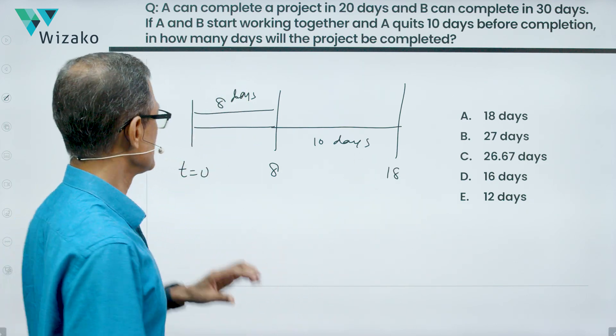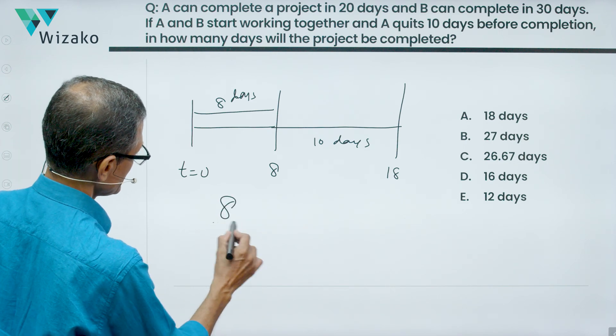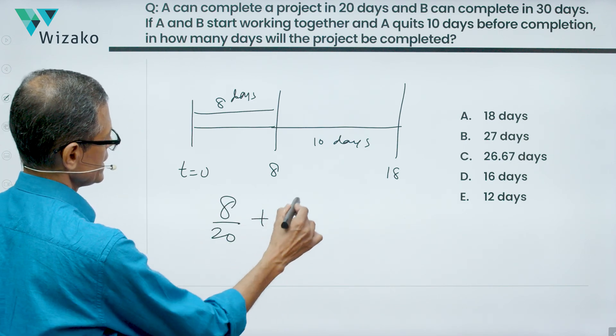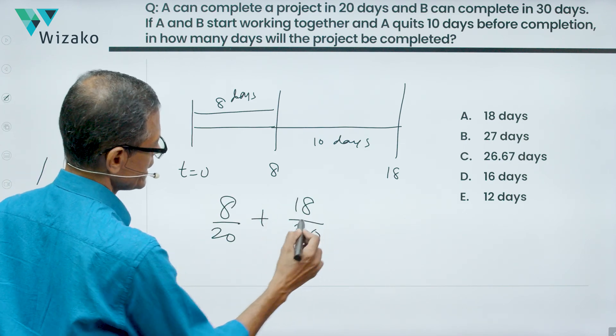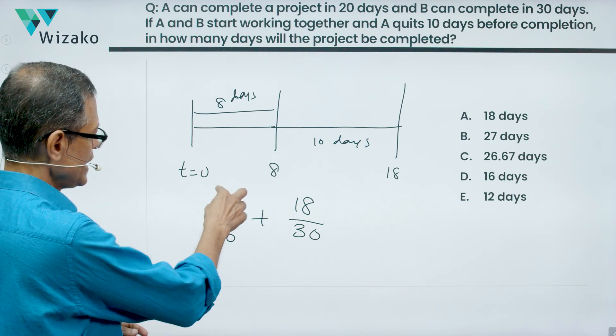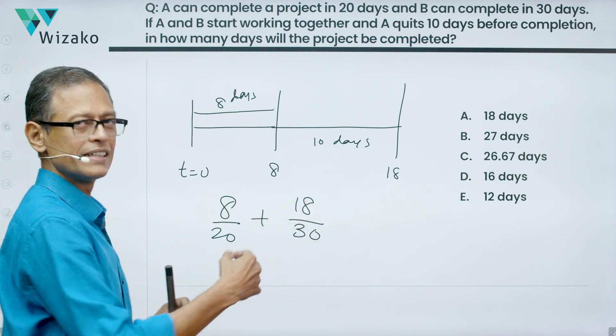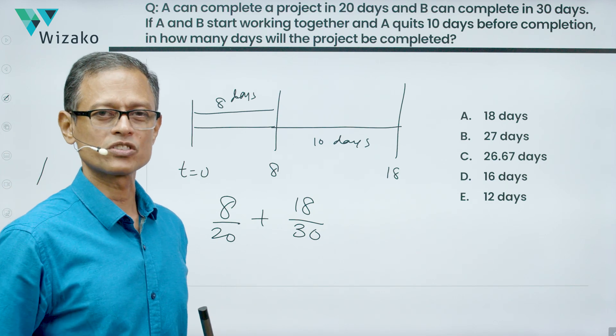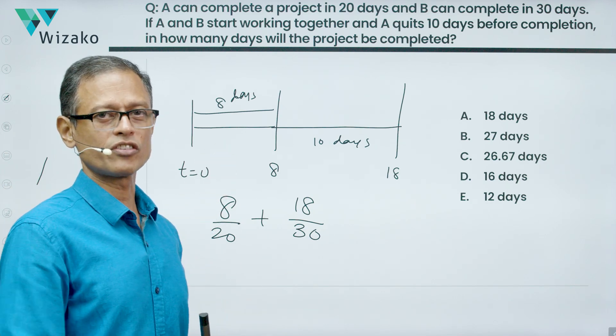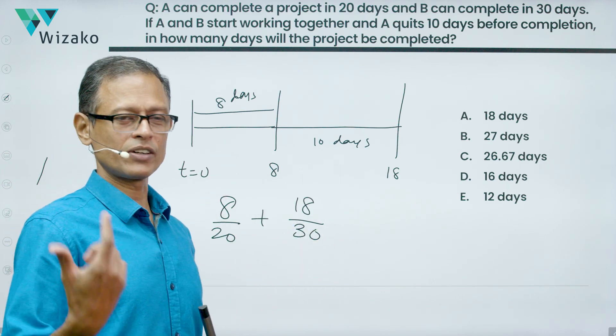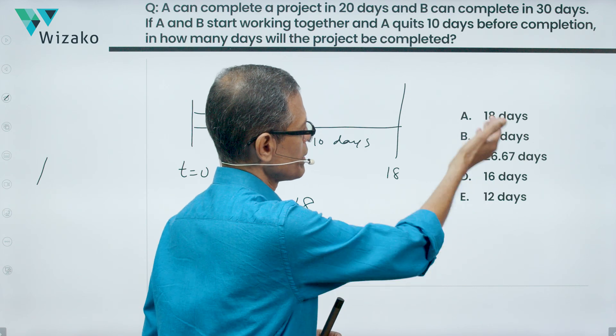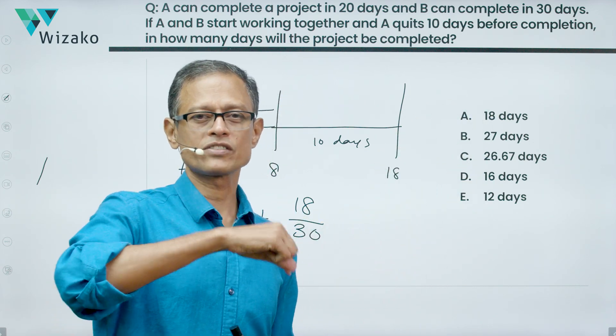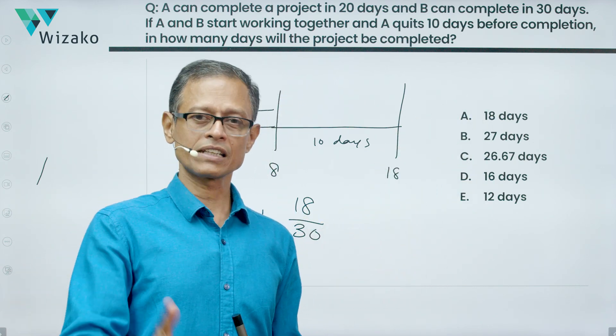Let's just do a cross verification if you want. In 8 days, A will complete 8/20 of the task. In 18 days, B will complete 18/30 of the task. 8/20, if you want, is 40%. 18/30 is 60%. So entire 100% of the project gets done. This is the gist of it. Do a cross verification after you're done. This is a kind of question for which you may be able to substitute back, substitute from answer options to get to it also, which is another way of going about it.